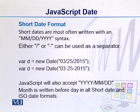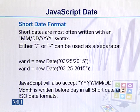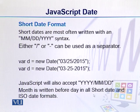Then we have the short date format. In short date format, we use either a slash or a dash. The month comes first, then the date, then the year. JavaScript also allows us to use slash separators with month and then date. The important thing is that the month will always come before the date, just like in ISO date format.